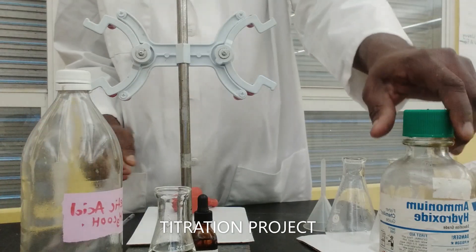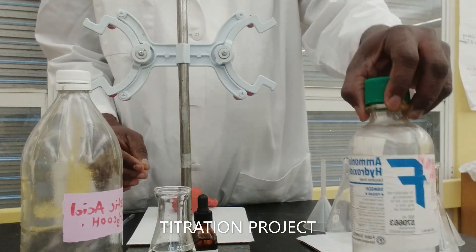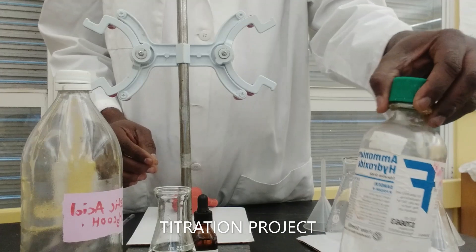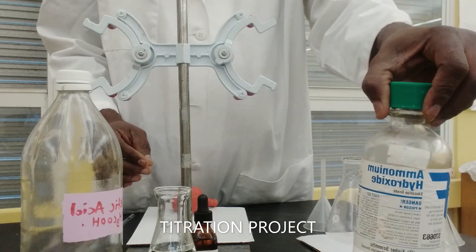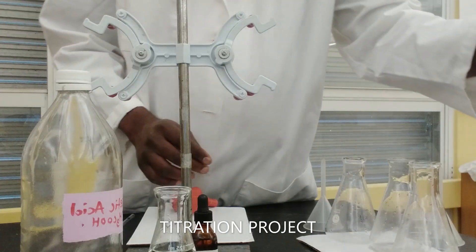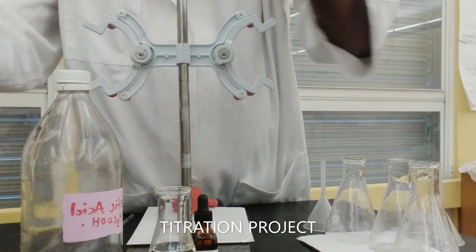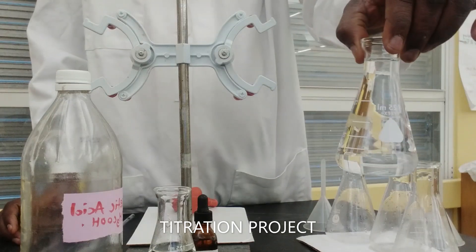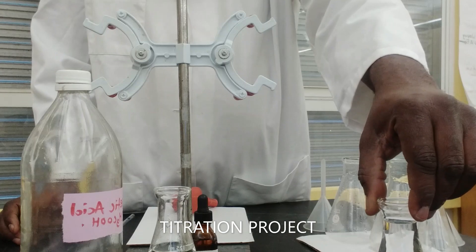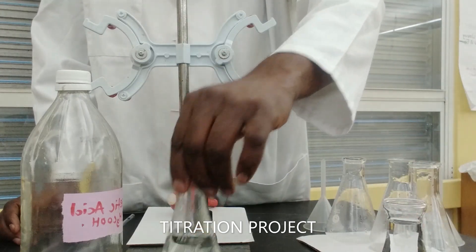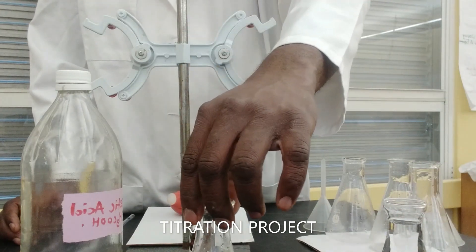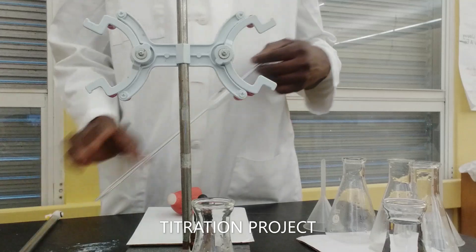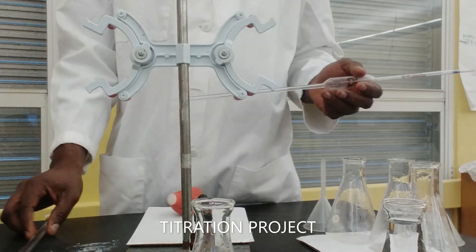Acetic acid is commonly called vinegar or also known as ethanoic acid, with a weak base ammonium hydroxide, which is commonly found in some cleaning reagents in the house. I'm going to set this aside.